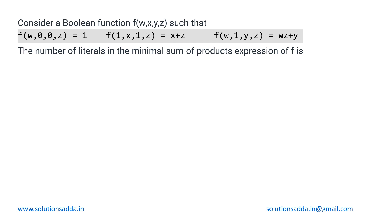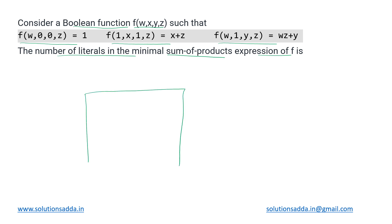This is a digital logic question based upon K-maps. We have been given a boolean function with four variables w, x, y, and z such that four expressions hold true, and we need to determine the number of literals in the minimum SOP form for the expression f. We can start by making a 4×4 K-map with these four variables w, x, y, and z.